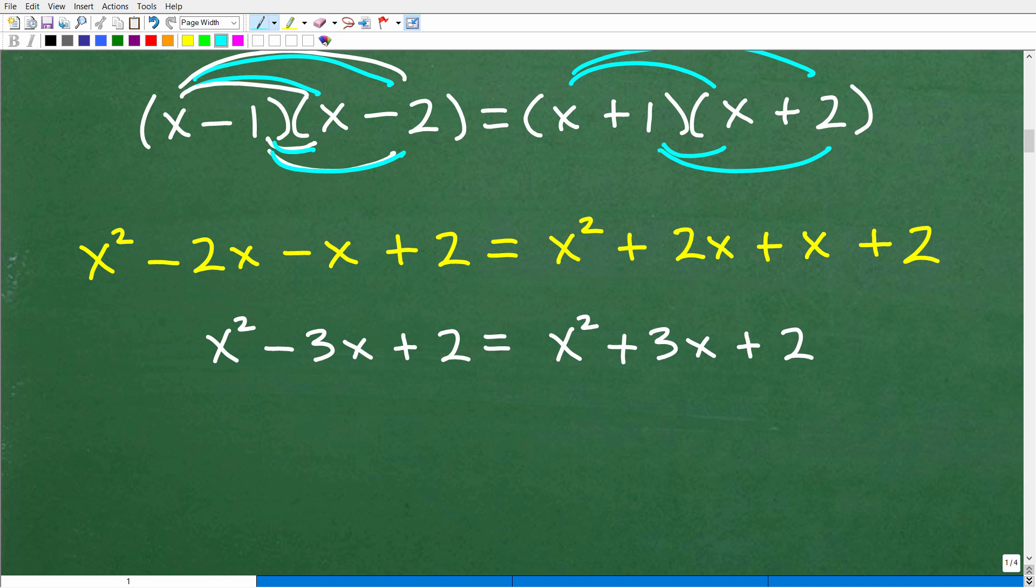All right. So the next thing we want to do here is combine like terms. So I have a negative 2x and a minus x here. That's negative 3x. And you always want to write your expressions in standard form, highest to lowest power. So x squared minus 3x plus 2. And then here I have a plus 2x and x. These are like terms. So I can write this as x squared plus 3x plus 2.